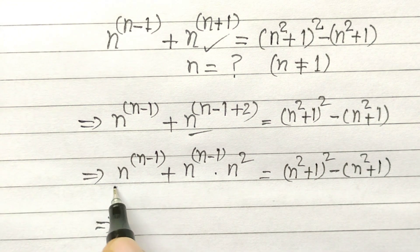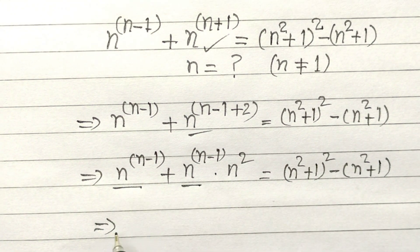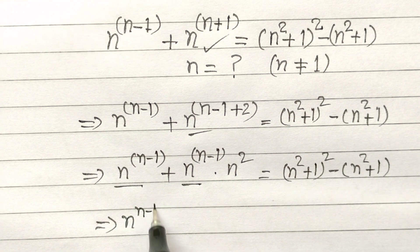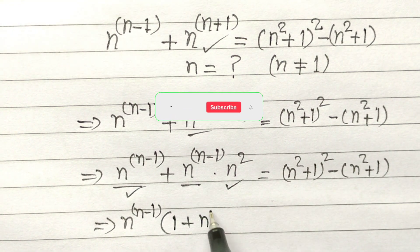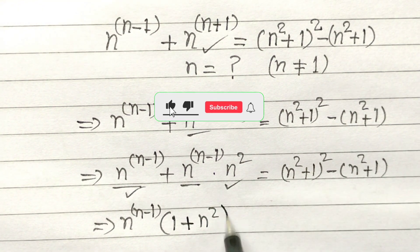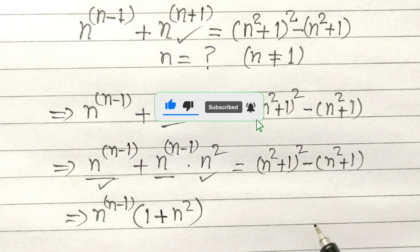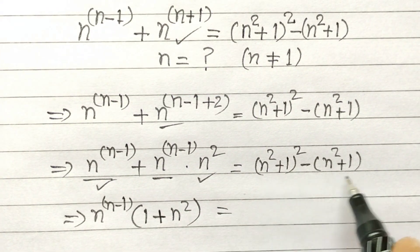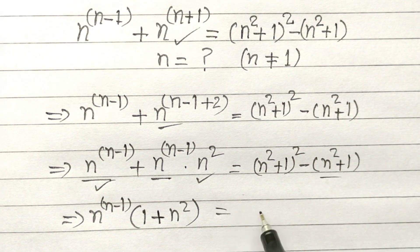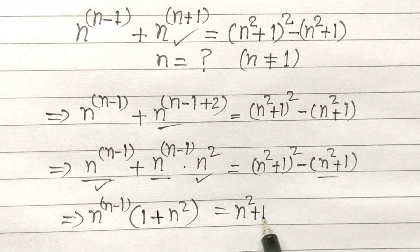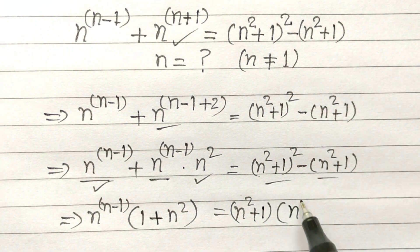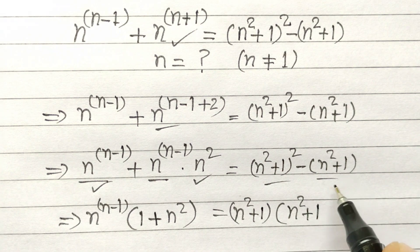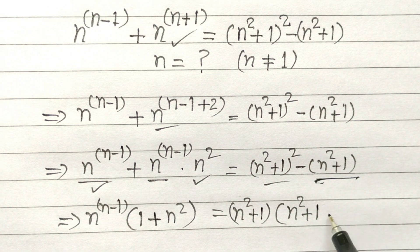Now, if we take n to the power n minus 1 as common, we have remaining here 1 plus n squared. Here, we will take n squared plus 1 as common — n squared plus 1 common. So, n squared plus 1, and here only minus 1.